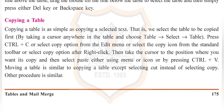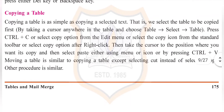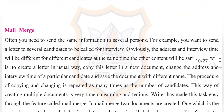Press Ctrl+C, or select the Copy option from the Edit menu, or select the Copy icon from the standard toolbar, or select Copy after right-clicking. Then take the cursor to the position where you want the copy, and select Paste using the menu, icon, or by pressing Ctrl+V. Moving a table is similar to copying, except you select Cut instead of Copy; the rest of the procedure is the same.